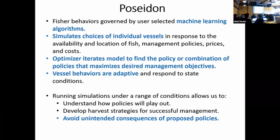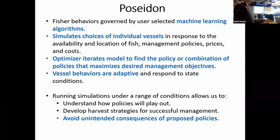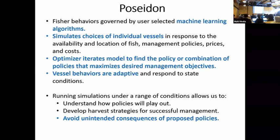Then we cross our fingers and hope that the fishery recovers with our policy. In Poseidon, you can say, I'm interested in lowering the TAC, but maybe there are other policy options or policy combinations that would also achieve my goal. Say your goal is to increase the revenue of the fishery by 30% — you tell Poseidon that's the goal to be optimized, give it a list of different policies to try, and the model will find the set of policies that gets you as close as possible to that 30% increase in revenue.